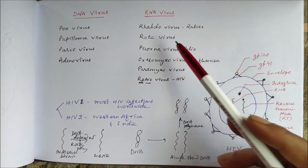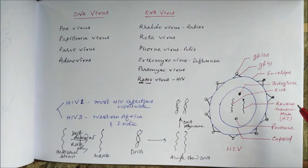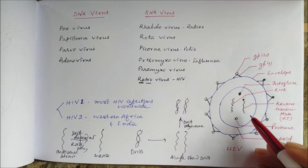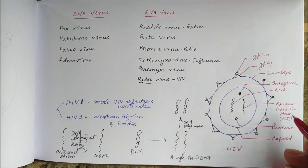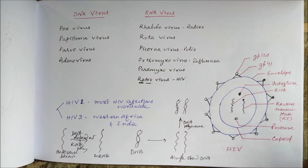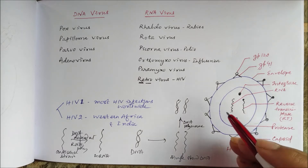In the case of RNA viruses, the RNA is first converted to DNA through reverse transcription, using the reverse transcriptase enzyme. In addition to reverse transcriptase, retroviruses also possess their own protease enzyme and integrase enzyme. The classic example is human immunodeficiency virus, HIV.